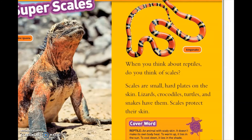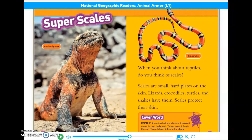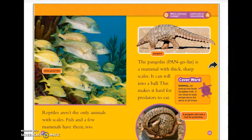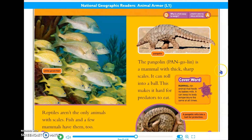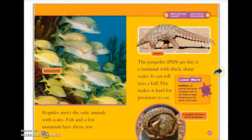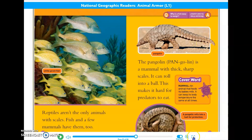So let's get back to the text. Remember to use the heading to help you identify the subtopic and also listen for words or details that repeat that could tell you what this section is about. Super Scales. When you think about reptiles, do you think of scales? Scales are small, hard plates on the skin. Lizards, crocodiles, turtles, and snakes have them. Scales protect their skin. Reptiles aren't the only animals with scales — fish and a few mammals have them too. The pangolin is a mammal with thick, sharp scales. It can roll into a ball. This makes it hard for predators to eat. Here we can see the pangolin at the top, and down here we can see how the pangolin is able to roll itself into a ball for protection.